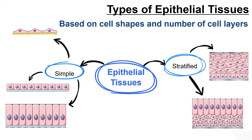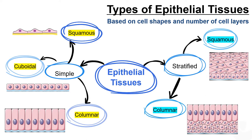Epithelial tissue has two names. The first name indicates the number of cell layers; the second describes the shape of its cells. Based on the number of cell layers, epithelia can either be simple or stratified. Simple epithelium consists of a single cell layer, while stratified epithelium is composed of two or more cell layers stacked on top of each other. Based on cell shape, epithelial tissue is classified into squamous, cuboidal, and columnar.